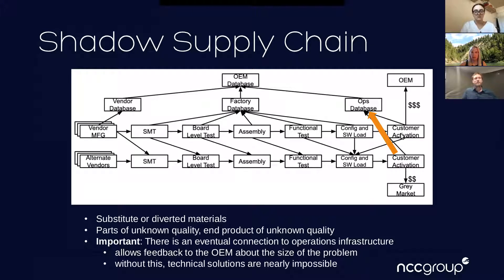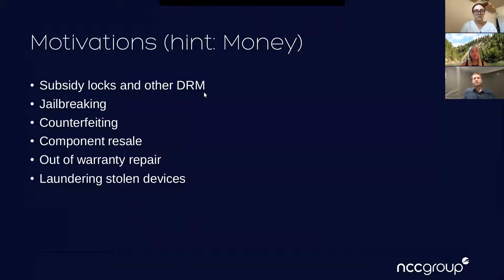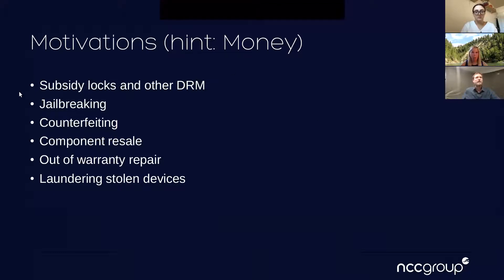When these devices connect back — whether it's a phone, a router, or any device that connects to your back-end APIs — you can see that information. Why does the shadow supply chain exist? The answer is almost always money. The movies like to think there will be some targeted government attack, but the reality is it's frankly always money. The battery example is classic — there was about 88% profit to be made just by making counterfeit batteries. For phones, subsidy locks and DRM are factors. Jailbreaking happens publicly, and those vulnerabilities get released so anyone can use them.